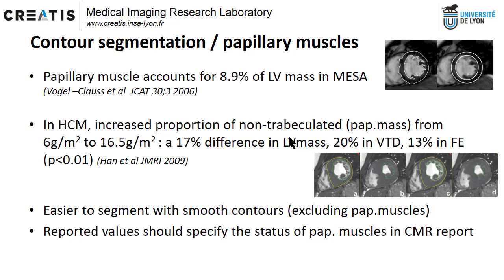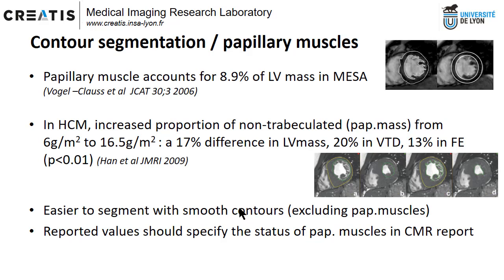Going back to tricks, there are a number of questions you will have to deal with. How do you deal with papillary muscles? Papillary muscles correspond to almost 9% of the LV mass, as shown in the MESA study. This proportion increases in hypertrophic myocardium — indexed by surface, it's almost three times higher. In practice, it is a good thing to include papillary muscles in contours for hypertrophic myopathy, but in most other studies, people use smooth contours excluding papillary muscles. You must report what you have done in the report or in the methodology of a paper.